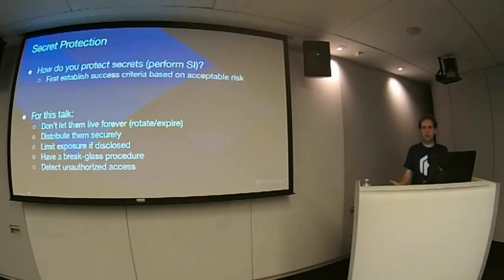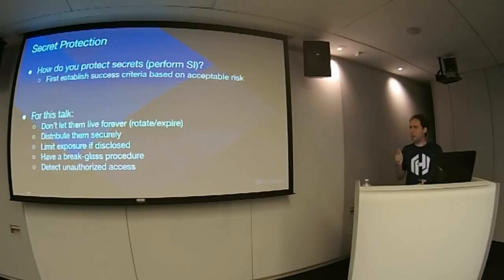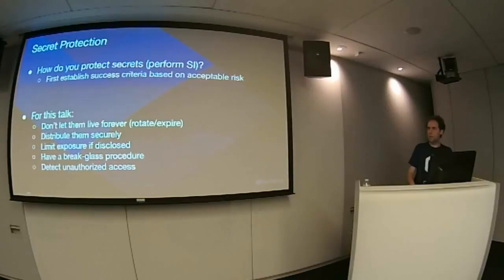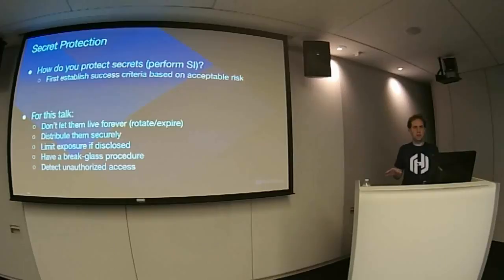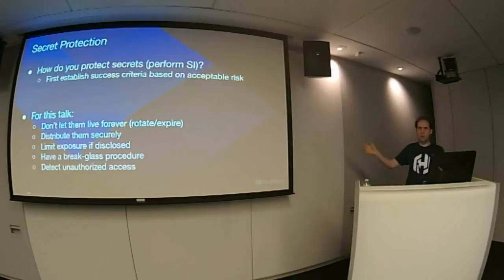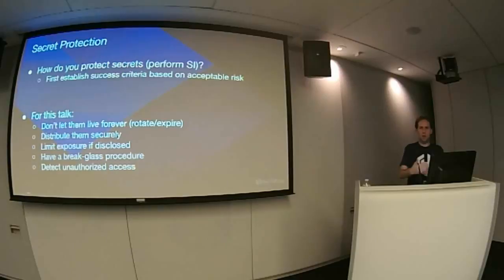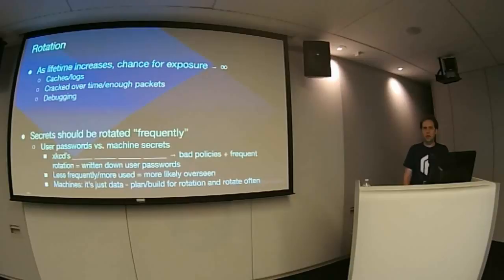To perform secure introduction, first establish your success criteria. Here's mine: I don't want secrets to live forever — secrets should not live forever. I want to distribute them securely. I want to limit the exposure if disclosed — assuming there will always be some exposure, I want to make sure the risk and harm are minimal. We're going to have a break glass procedure — when something's been compromised, we want to be able to stop further access, perform forensics, and rotate all secrets after reestablishing trust. And finally, we want to detect unauthorized access. This needs to be figured out during the planning process, not after.